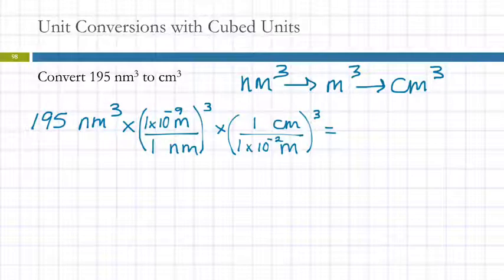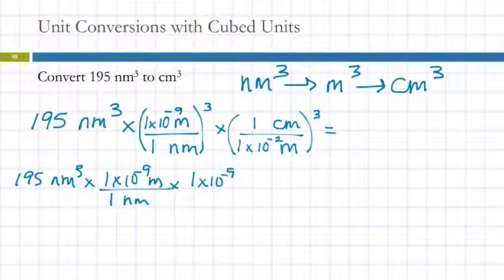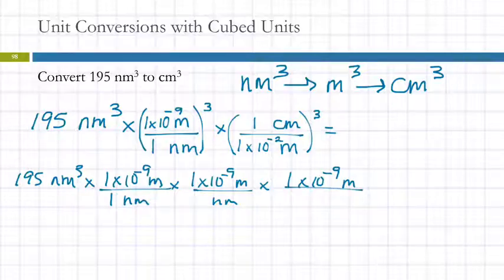Okay? If you find that you mess up doing that, you can do it a longer way. Maybe you could say, well, 195 nanometers cubed times one times ten to the minus nine meters per one nanometer times one times ten to the minus nine meters per nanometer. You get the idea. It's tedious. But maybe you need to write it out like this once to just make it clear in your head what's going on.